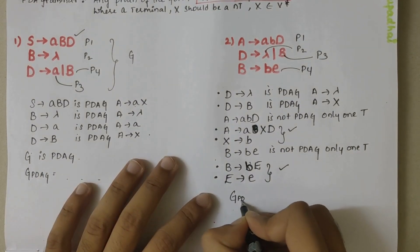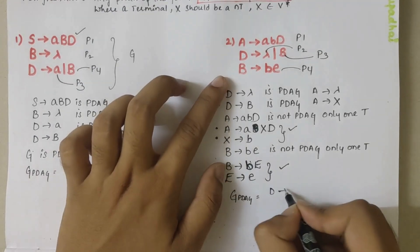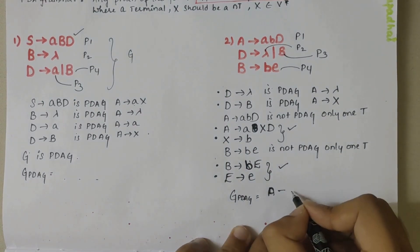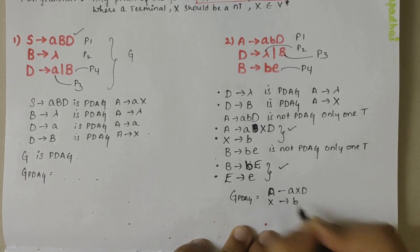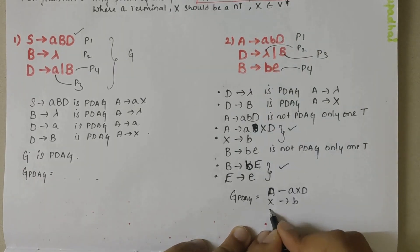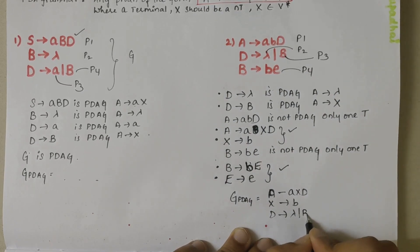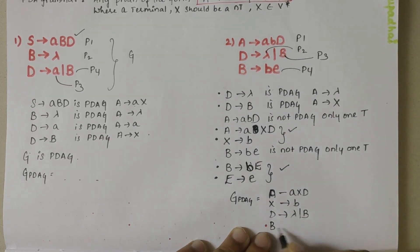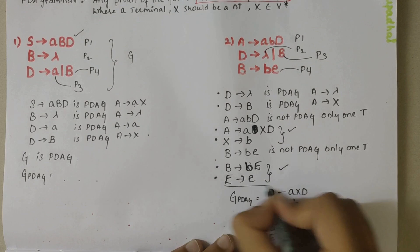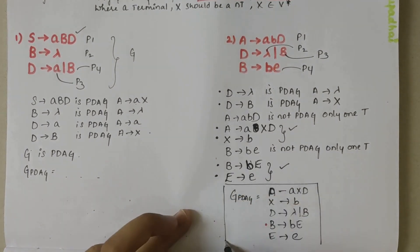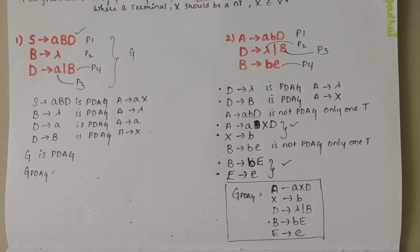Now that I have obtained the new grammar, I can write: Grammar PDAG equals — A derives aX, D; X derives b; D derives lambda; D derives B; B derives bE; and E derives small 'e'. This is the grammar which is in PDAG form.